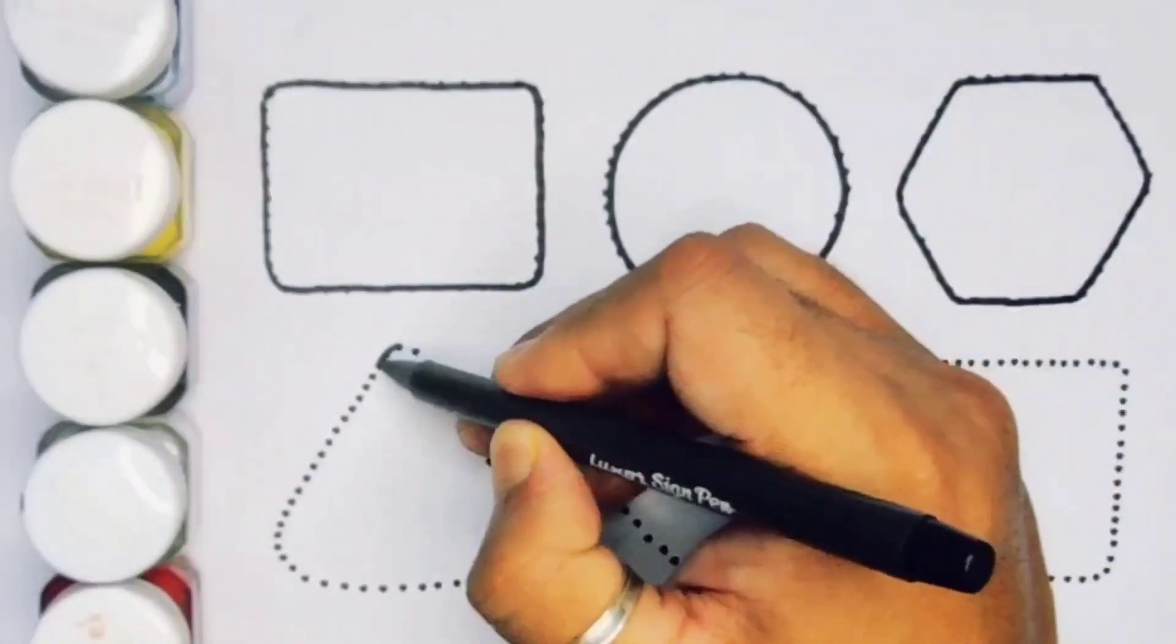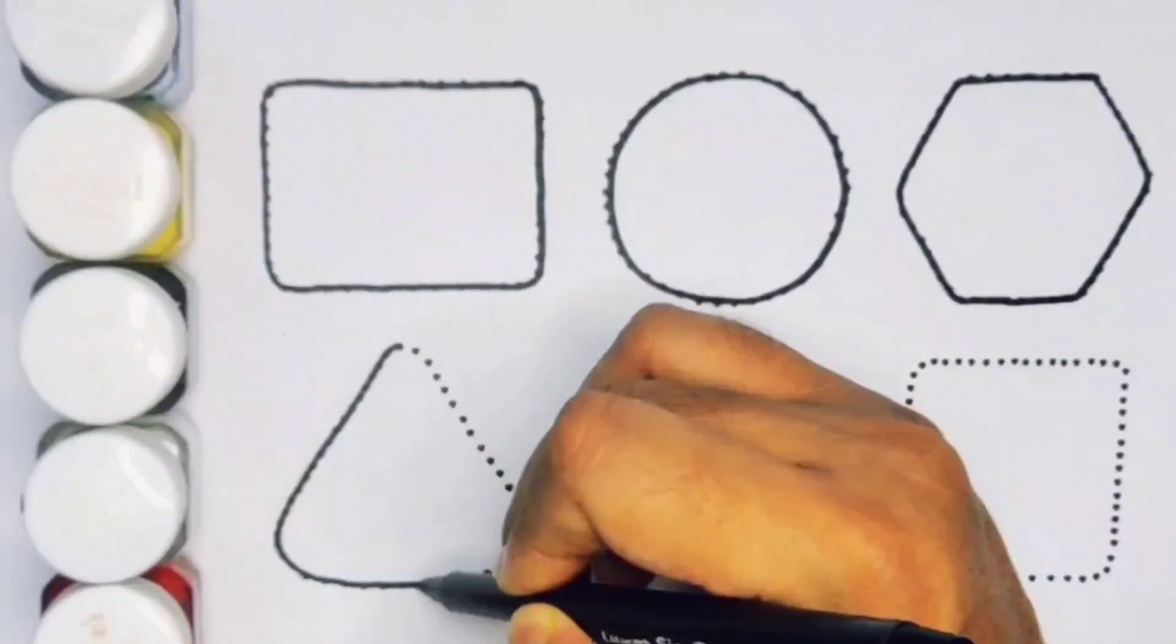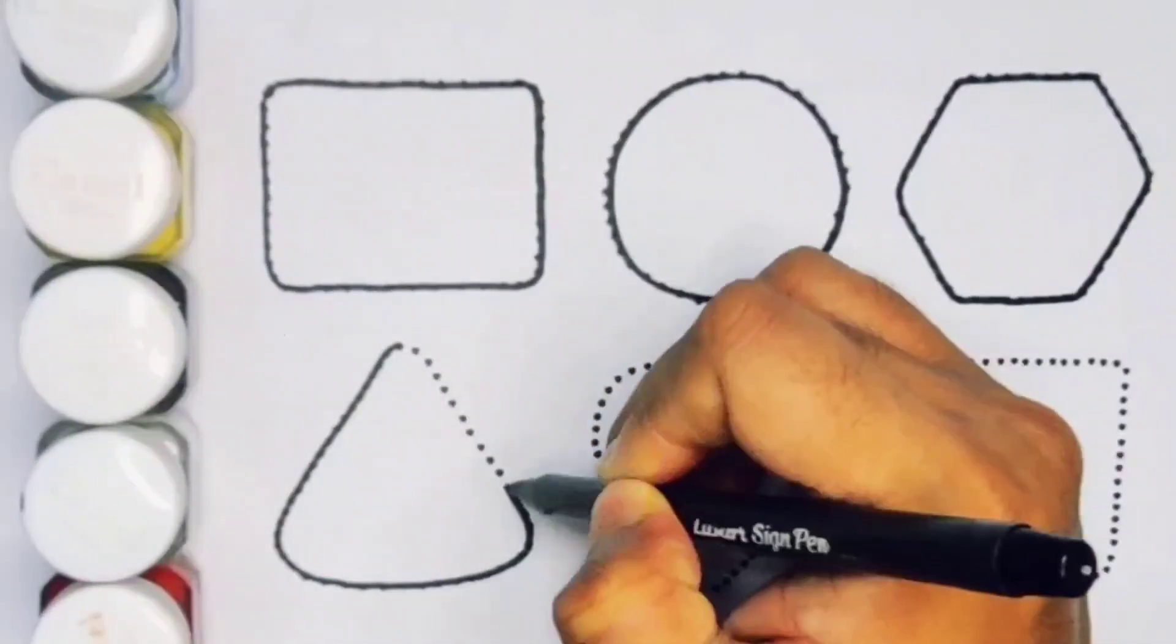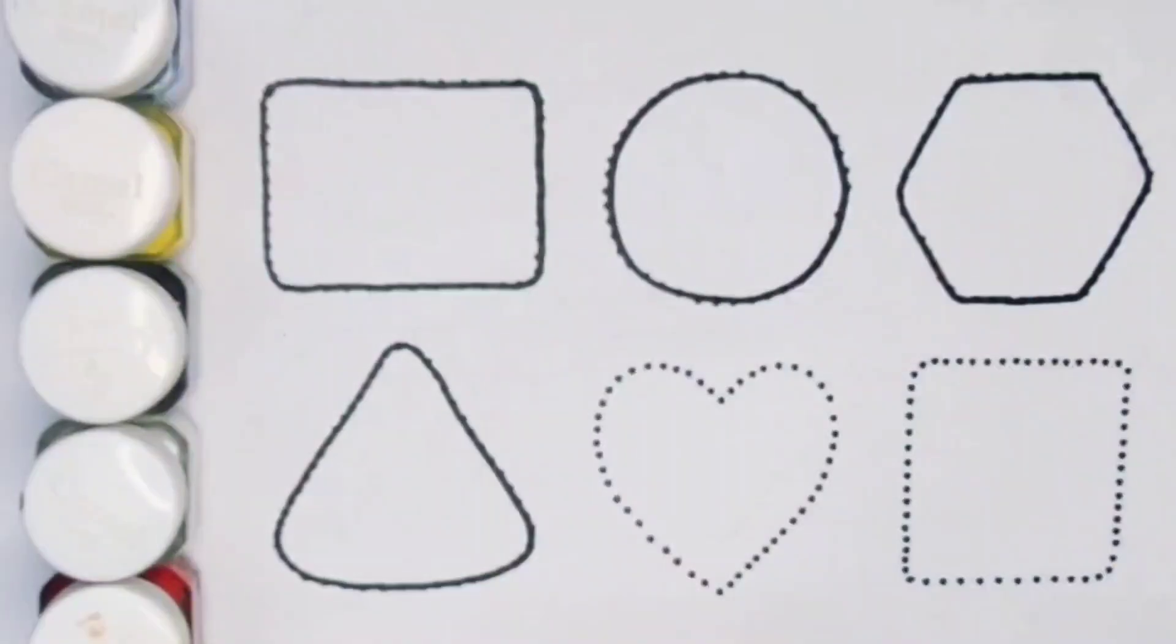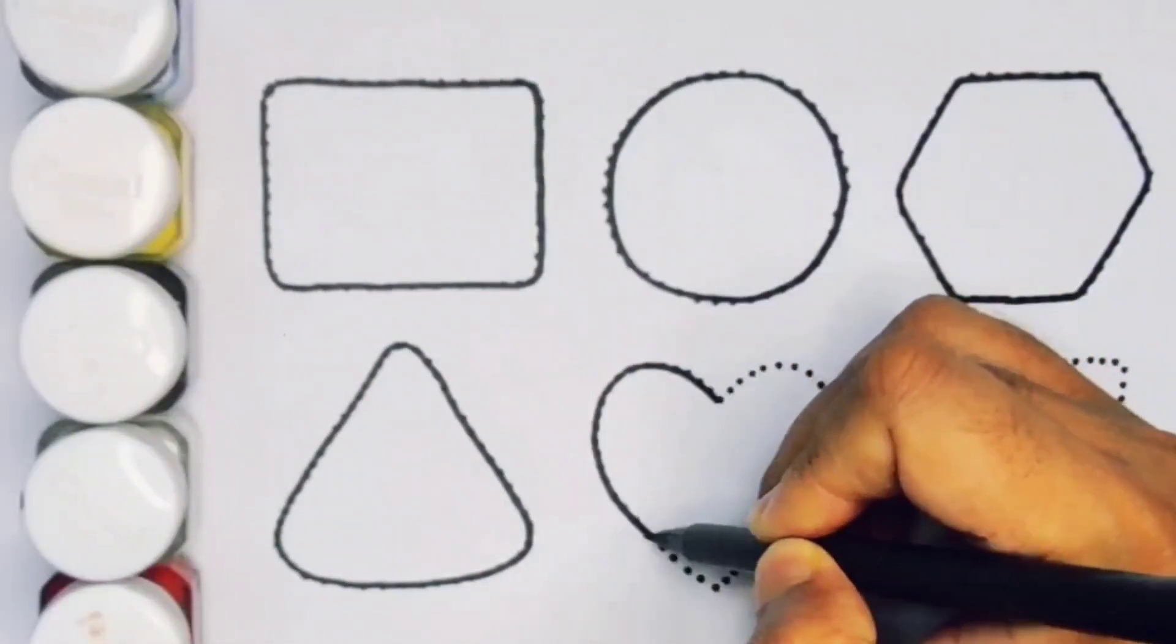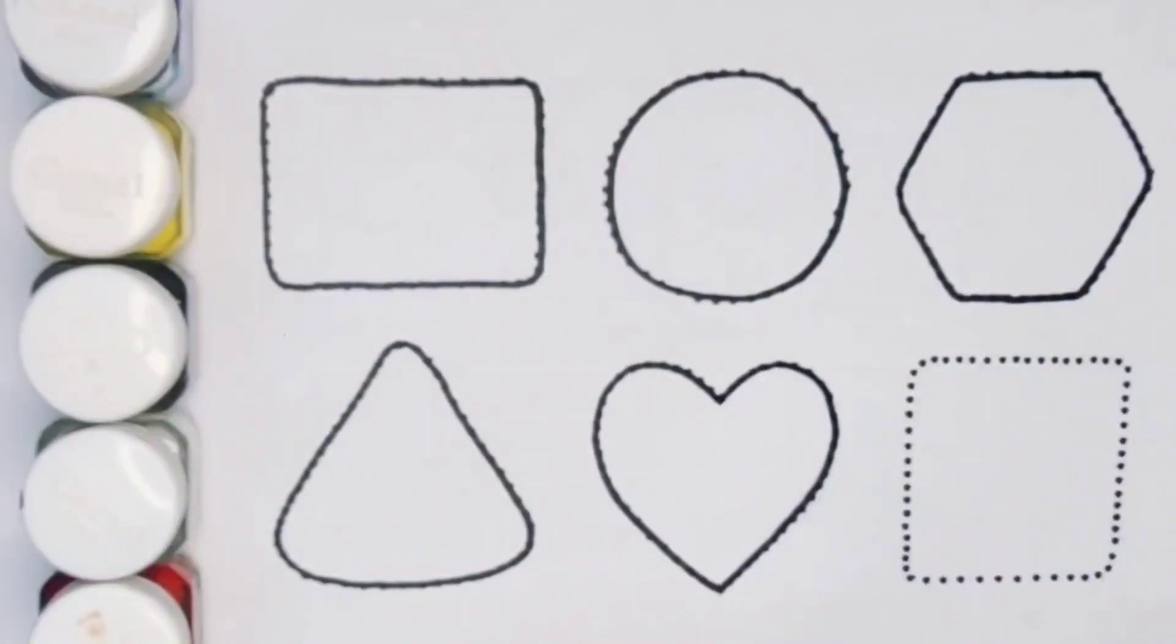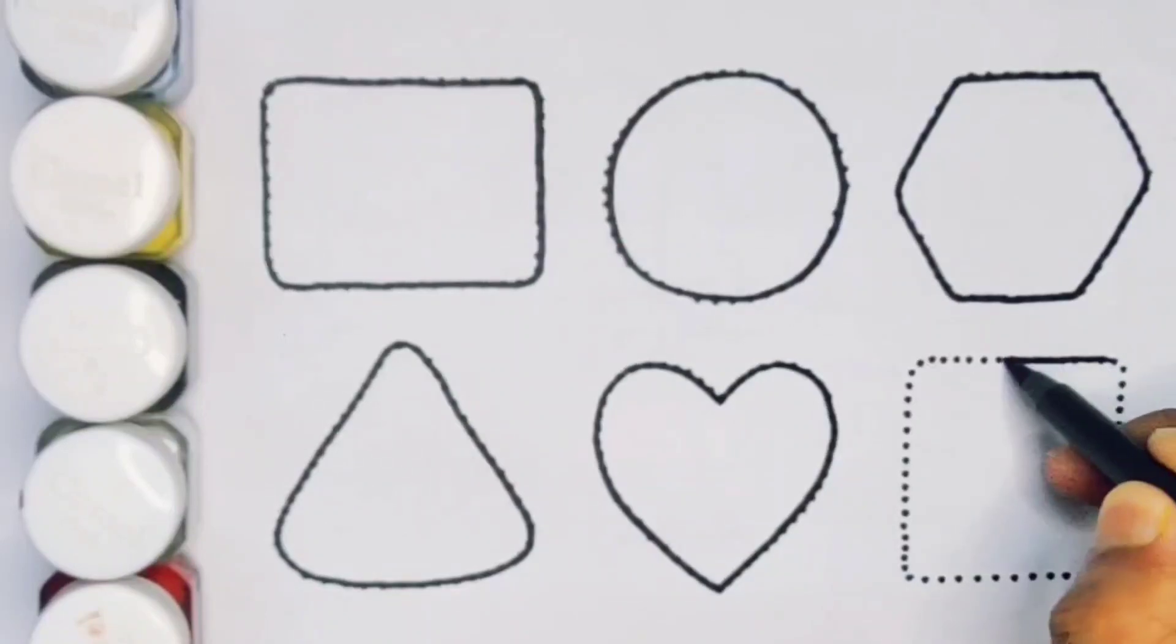Next, triangle. Next, heart. Next kids, square.